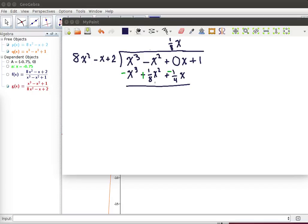We'll need to get a common denominator here, so this is -8/8 x², so this will be -7/8 x² - 1/4 x, and then we might for convenience sake bring down that +1.